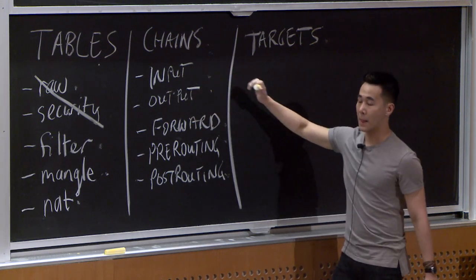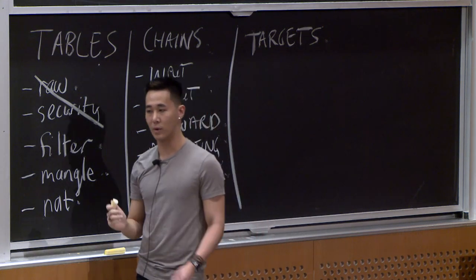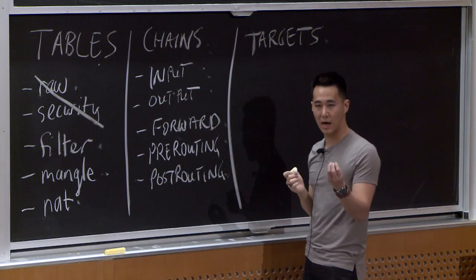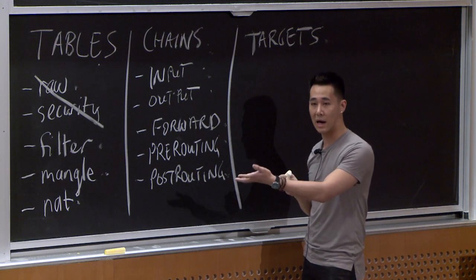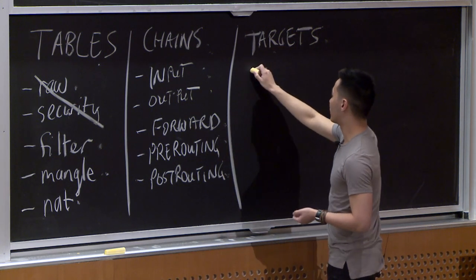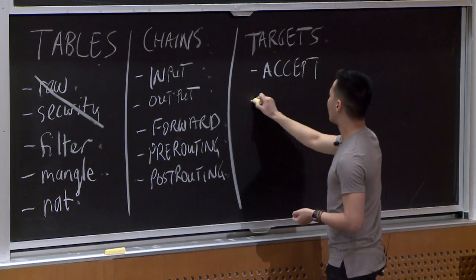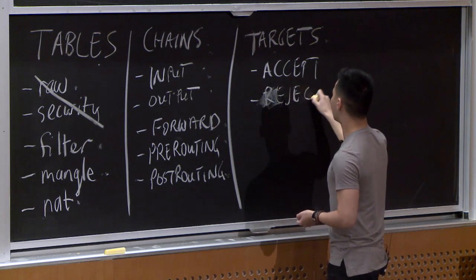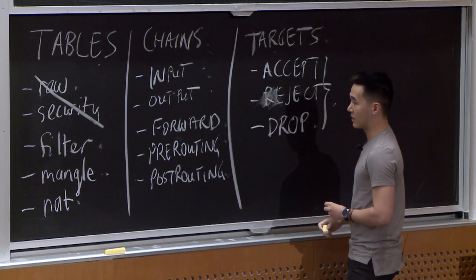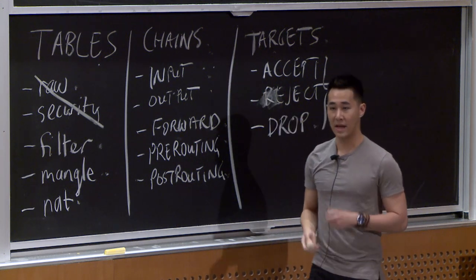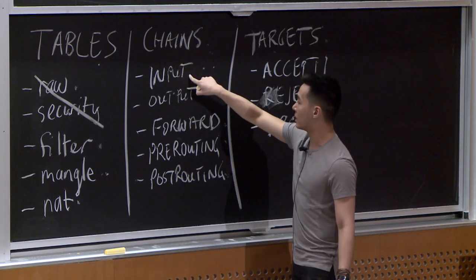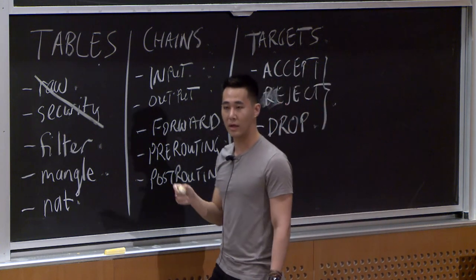Tables have chains, and chains have specific rules. For example, a rule in the filter table's input chain could say: if a packet comes in from this IP address to this destination port, allow it and deny everything else. The action to allow or deny is a target. The main targets are: accept, reject, and drop. A chain can also be a target — I can define a custom chain with rules within it, and set an input rule's target to jump to that custom chain.